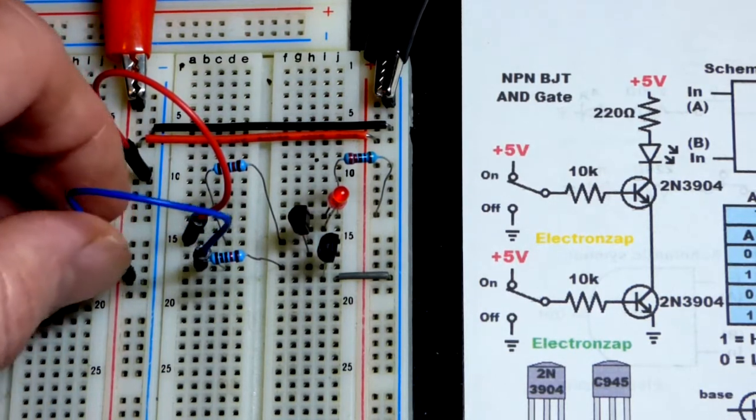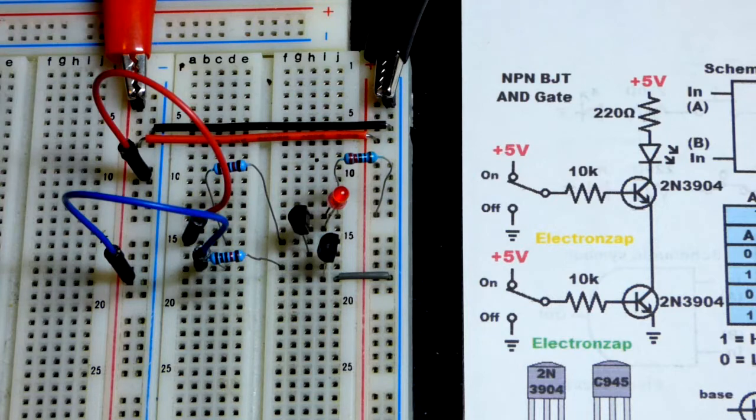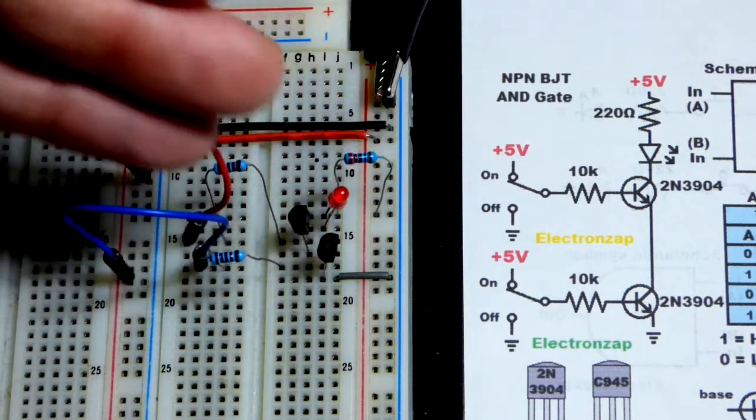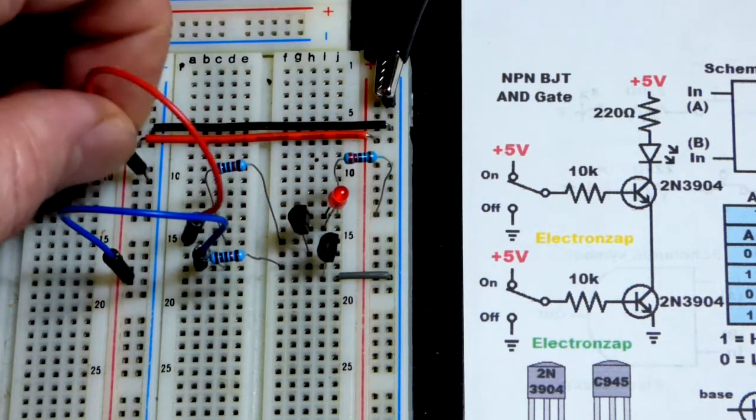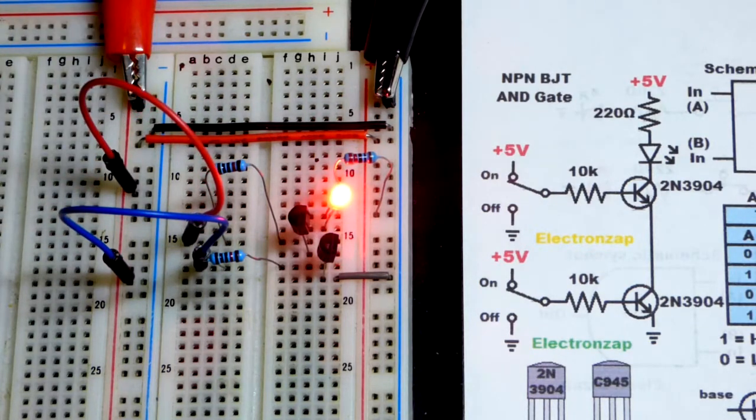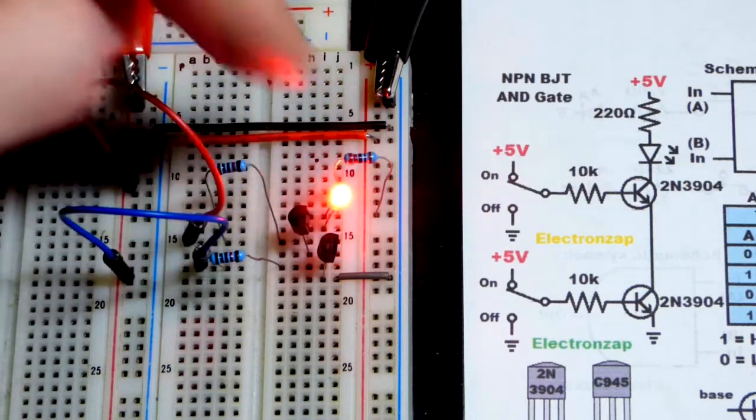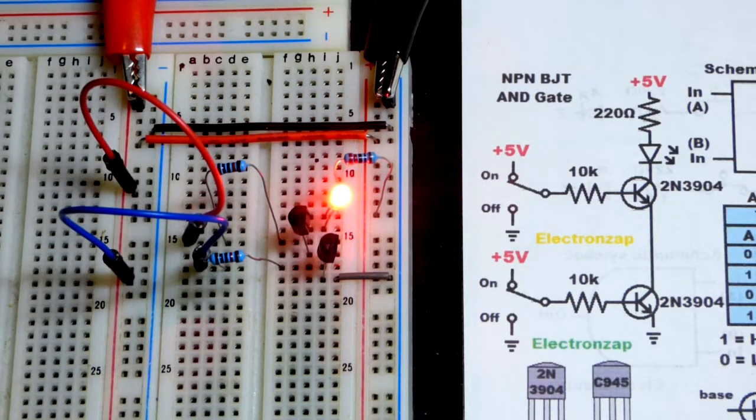Now we're going to our third position right there to the positive supply. It's still off because one of our inputs are off. We need both inputs on. Need to give them both five volts however you want to say it for the LED, our output, to turn on right there. So that's it for the demonstration. Hope you enjoyed.